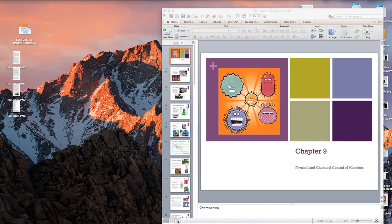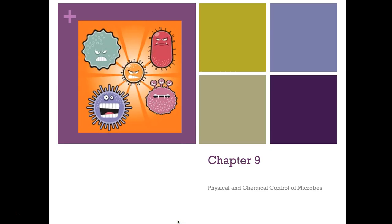Hello everyone and welcome to your chapter 9 screencast, which is on physical and chemical control of microbes. We want to really dive into how we are controlling these microorganisms within our world. We need to figure out the degree of exposure we have to them, especially the ones that are potentially harmful or pathogenic, which are going to be the most concerning.